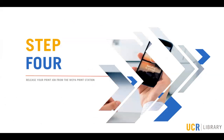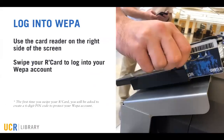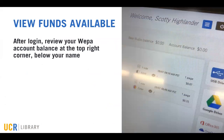Step four — in order to release your print job, log in at the WEPA kiosk by swiping your R card using the card reader on the right side of the screen. First-time users will be asked to create a six-digit PIN code to protect your WEPA account. Once logged in, review your WEPA account balance at the top right of the screen, right below your name. At this time, if you need to add funds, you can do so right at the kiosk.